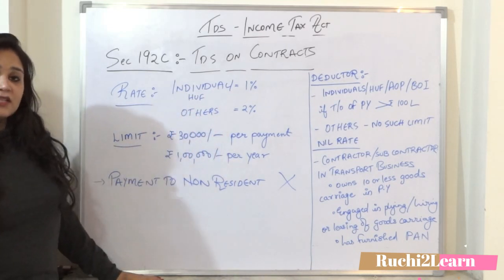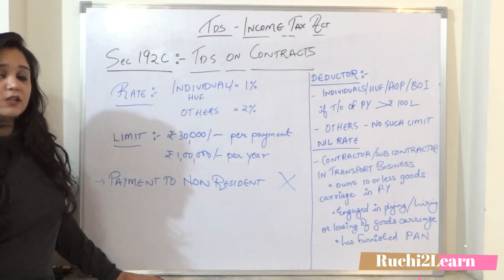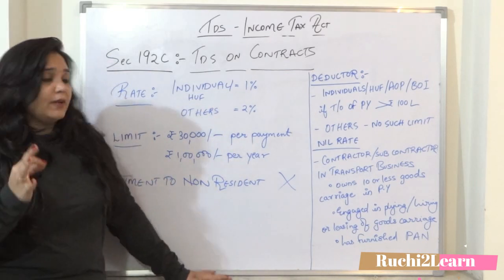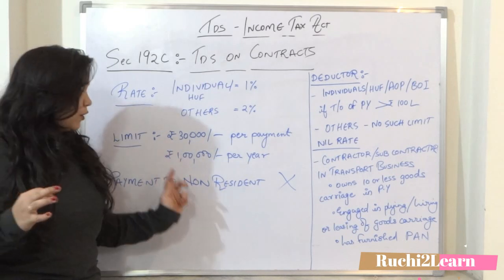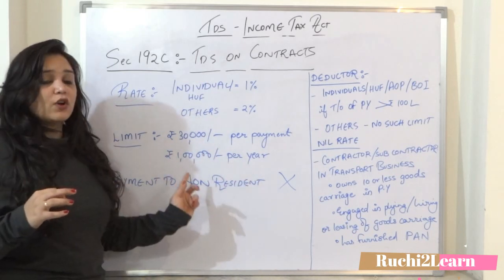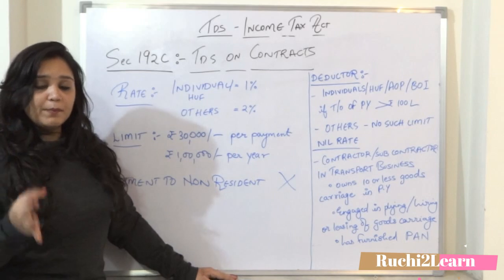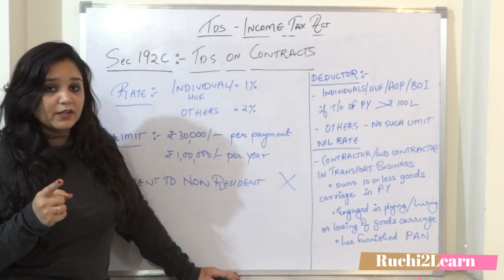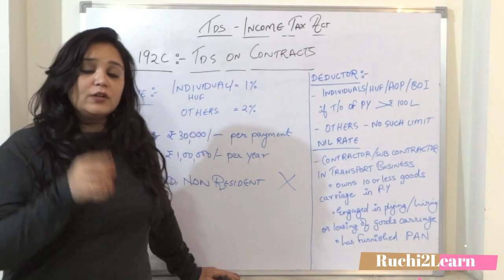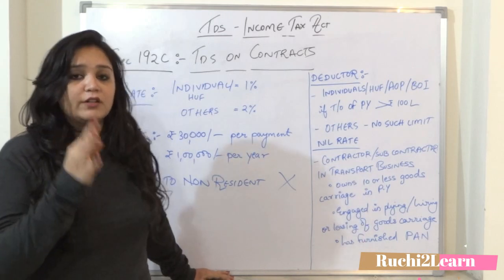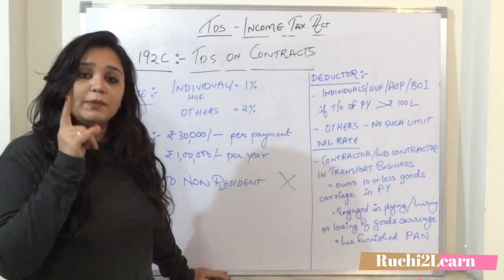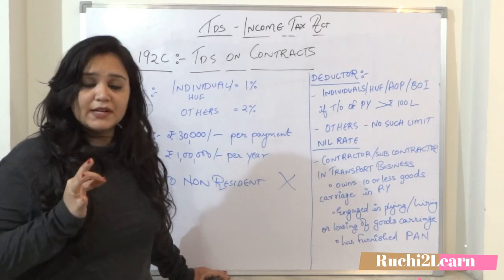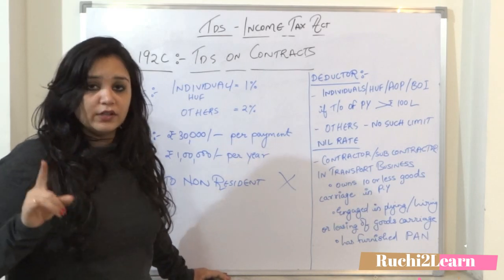Next, the limit — that means up to what amount no TDS will be deducted. Per payment, the limit is 30,000, and for the whole year it should not exceed 1 lakh. If your per payment is 30,000 or more, then TDS will be deducted. Even if your per payment is less than 30,000, TDS will still be deducted if your total payments exceed 1 lakh for the whole year.